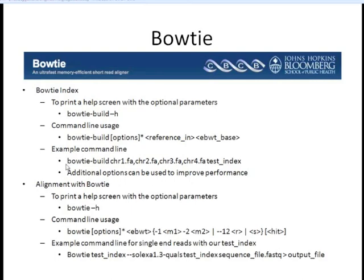With our index created, we now align our reads using the bowtie program. The command line takes all your options, your index, the sequence input — supporting single-end or paired-end reads — and your output directory. In the example: type 'bowtie', give it the test_index we created, tell it to run as a quality-aware aligner by specifying the quality scale. For newer Illumina data, Solexa 1.3 quals is appropriate. Then give it the sequence name and the output.